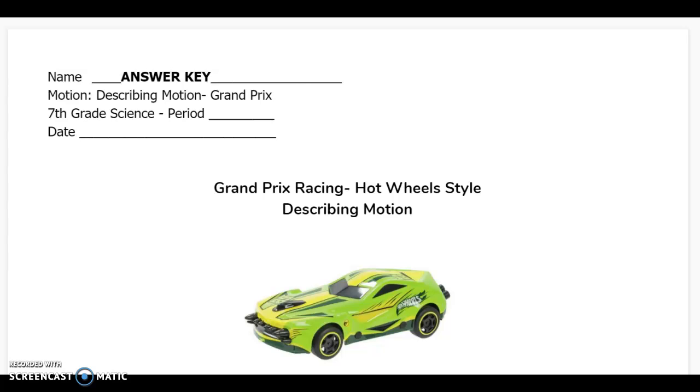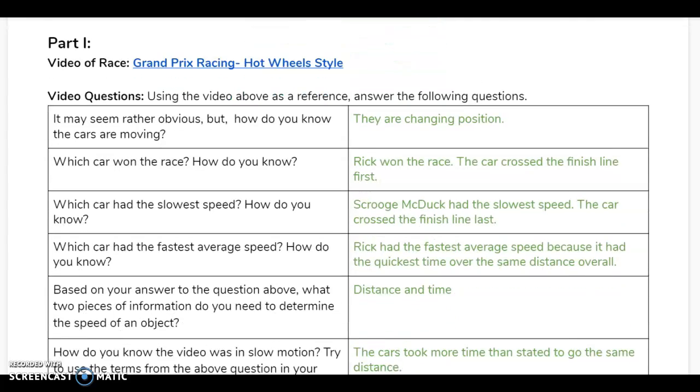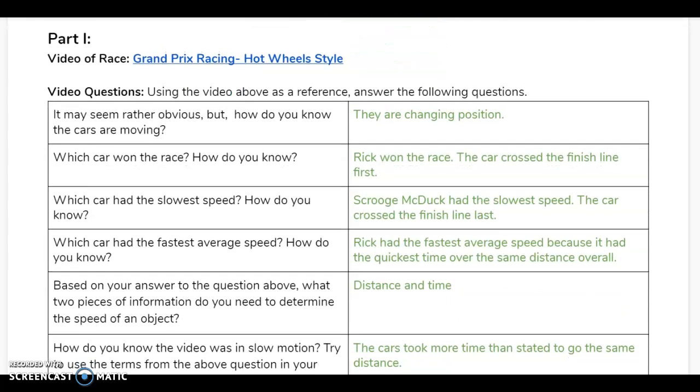This video will be going over the answer key for the Describing Motion Grand Prix document. In part one we watched a video where six Hot Wheels style cars went down a ramp and basically raced.